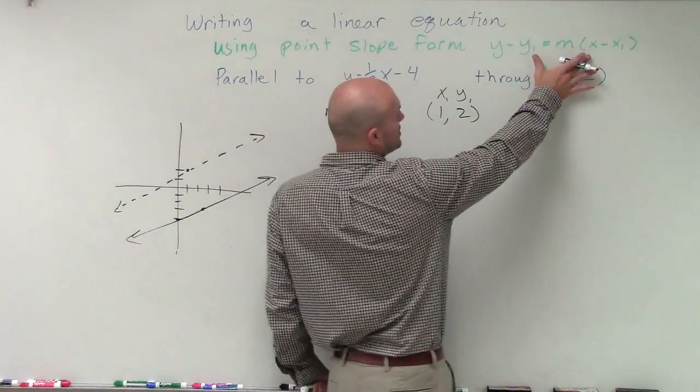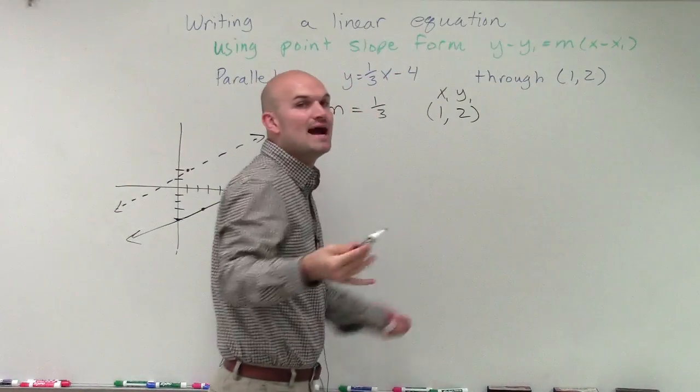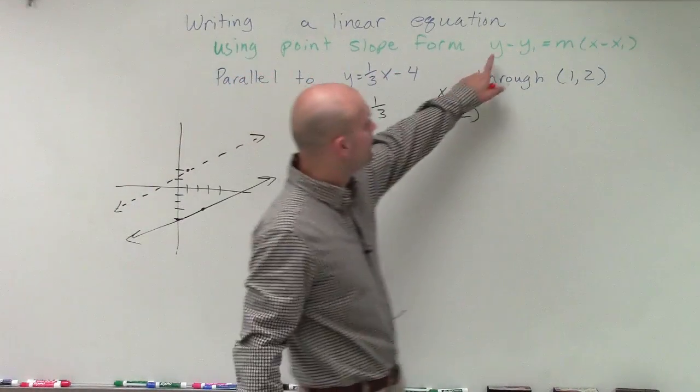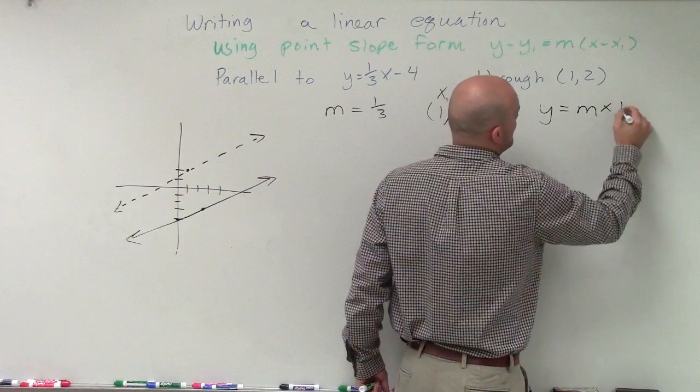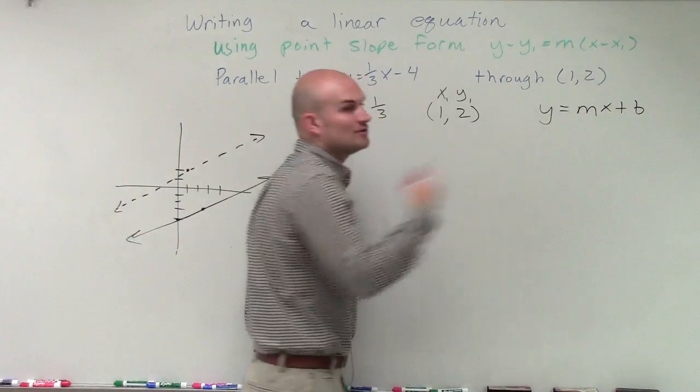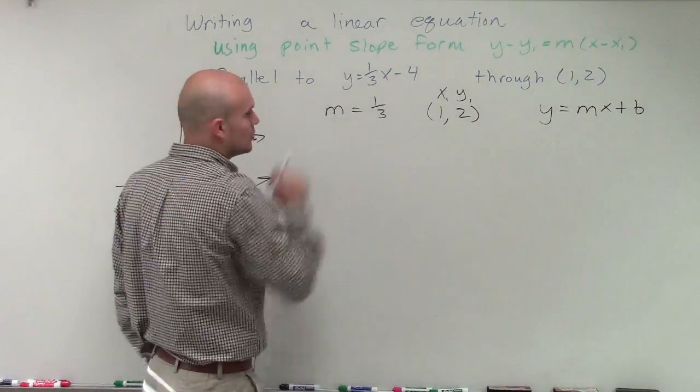And by using our point slope form, we can plug any point in for x1 and y1. And again, it doesn't matter what you label your points. But we're going to want to keep the y and the x because we want to write our final equation in y equals mx plus b format. So we need to have those variables to represent all of the points on our line in slope-intercept form.